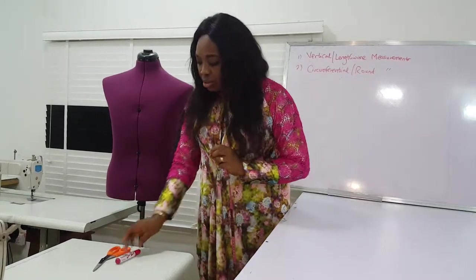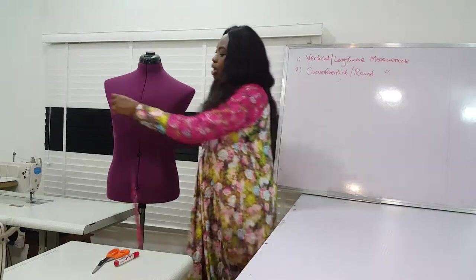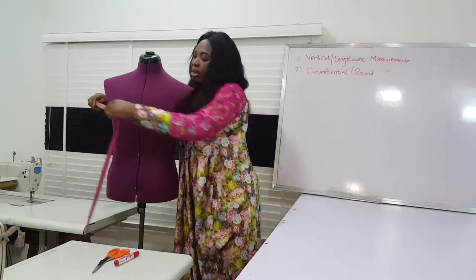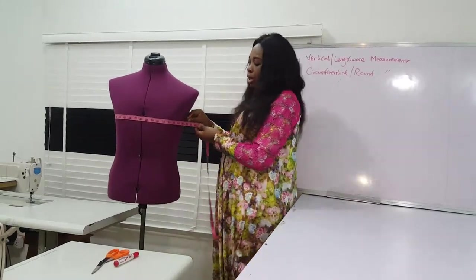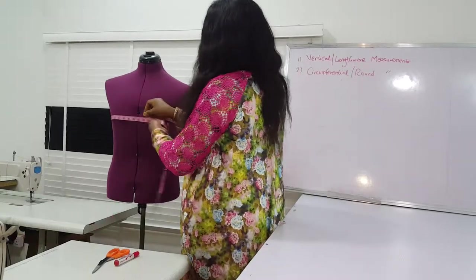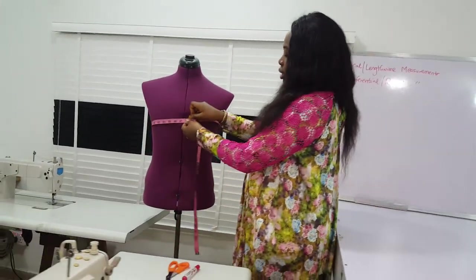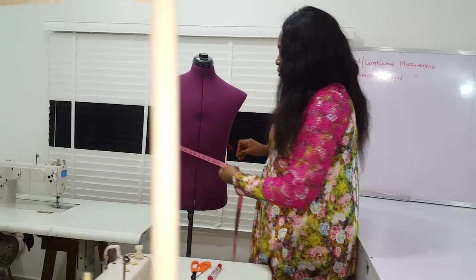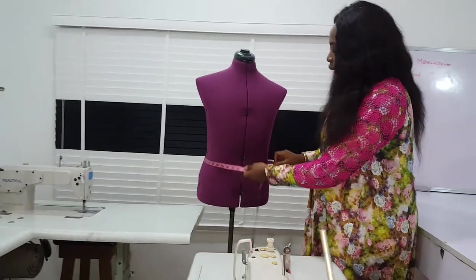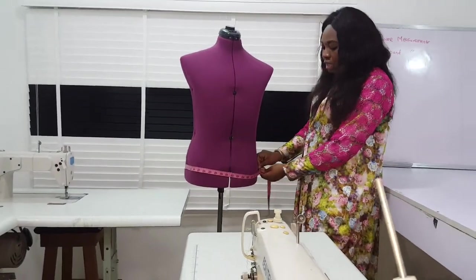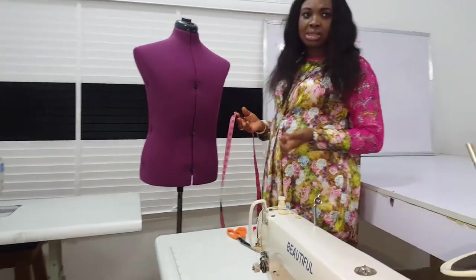When you talk about circumferential or the round measurement, you talk about the measurement that goes across the body — like the bust measurement, which some people call round bust. Then you have the round waist or the waist measurement, and you have the round hip or the hip measurement. These are circumferential measurements.